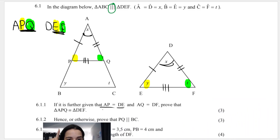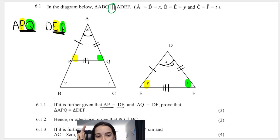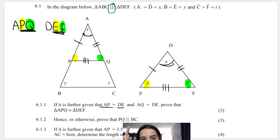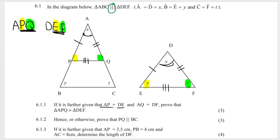The next question says: hence or otherwise — so based on what you just calculated, using what you just proved, that's what 'hence' means — prove that PQ is parallel to BC. Now let's take a look at where PQ and BC are. PQ is this line over here, and BC is this line over here. So they're saying, because of what you just found, can you now prove that this line PQ is parallel to BC?